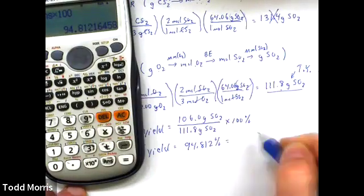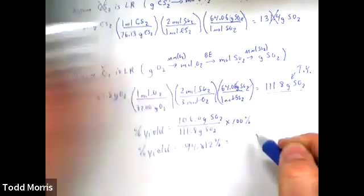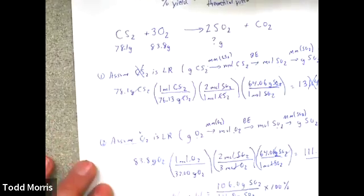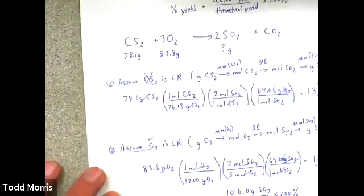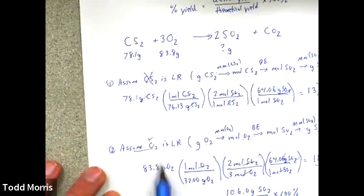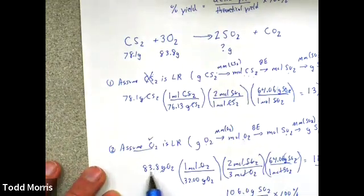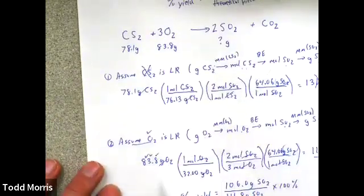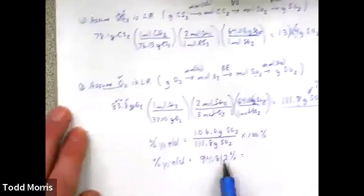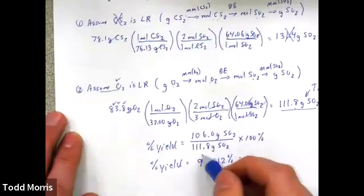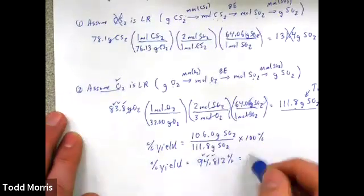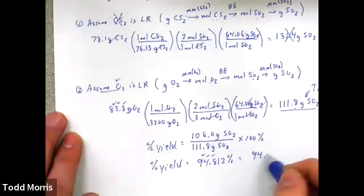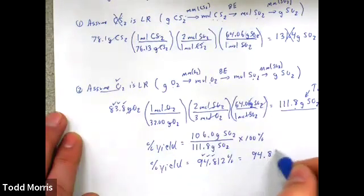Finally, rounding to the correct number of significant figures: the theoretical yield of 111.8 grams has only three significant figures, which limits our final answer to three significant figures as well. So we correctly report our final value as 94.8% yield.